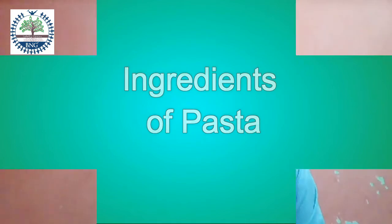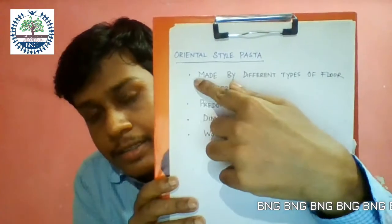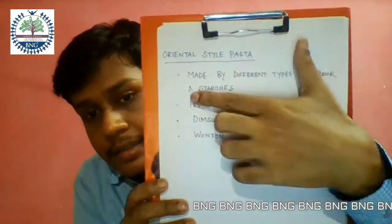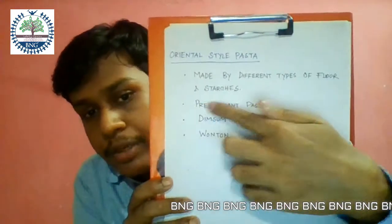The topic is Oriental style pasta. Ingredients: Oriental style pastas are made by different types of flour and starches. The pre-dominant style pasta in Oriental cuisine is noodles.